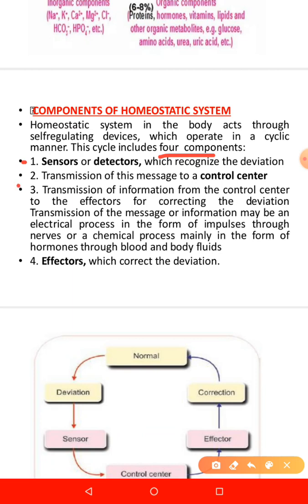Then we have transmission of the message to the control center. Transmission of the message can either be through hormones, because hormones are chemical messengers — they carry a particular message. Transmission can also be through neurons, which carry electrical impulses. Effectors can be muscles or a gland.